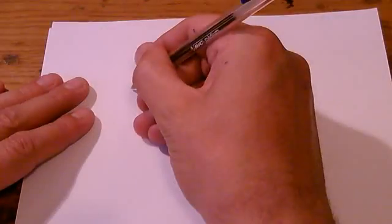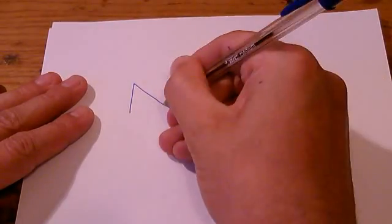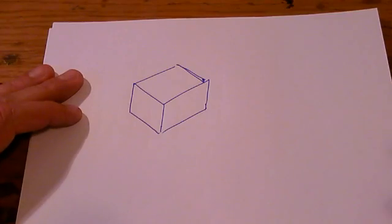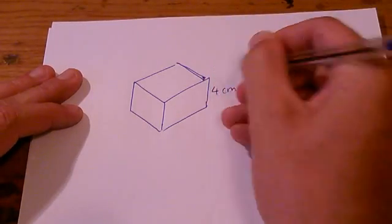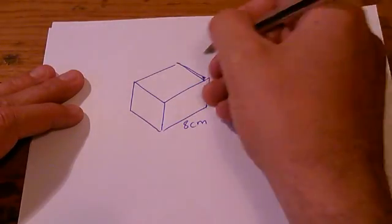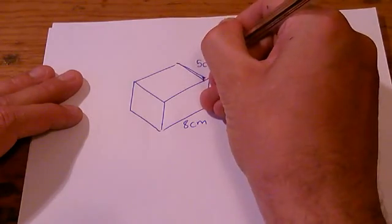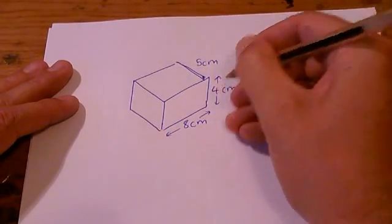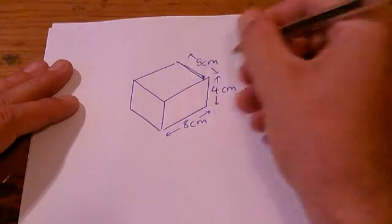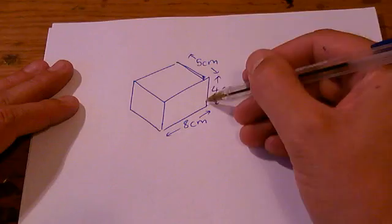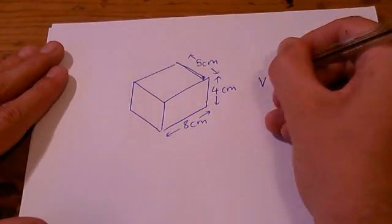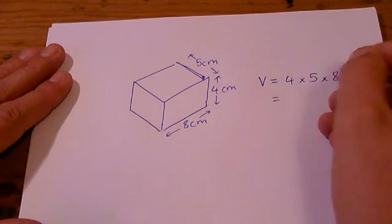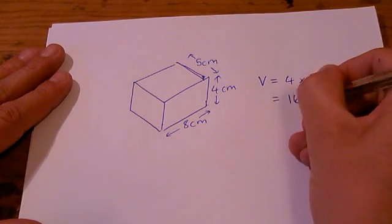So let's just have a very quick look at two examples. So let's call this 4 centimeters, 8 centimeters, and 5 centimeters. So the 8 centimeters refers to that distance, 5 centimeters refers to that distance, and the 4 centimeters is the height. As I said, it doesn't matter which one you call which, we just have to make sure we're multiplying all of them together. 4 times 5 is 20, times 8 is 160 centimeters cubed.